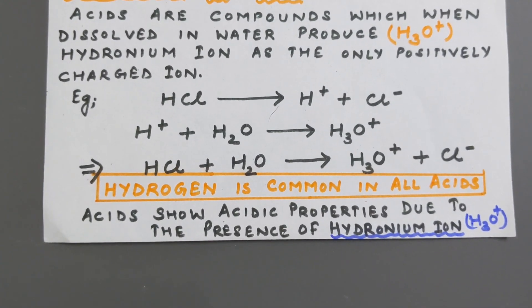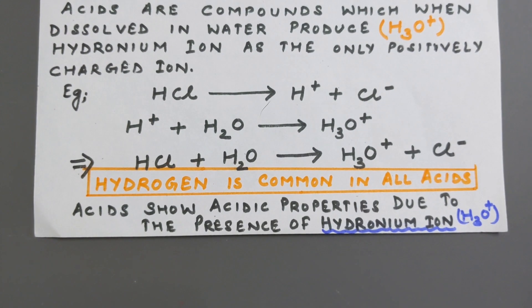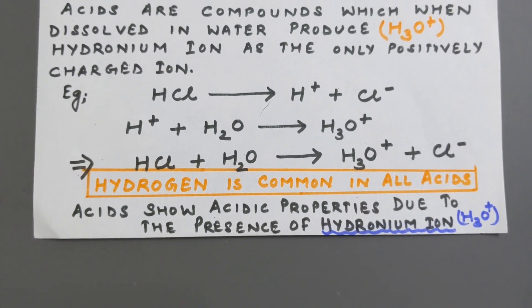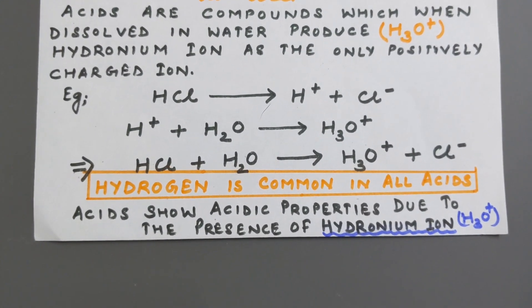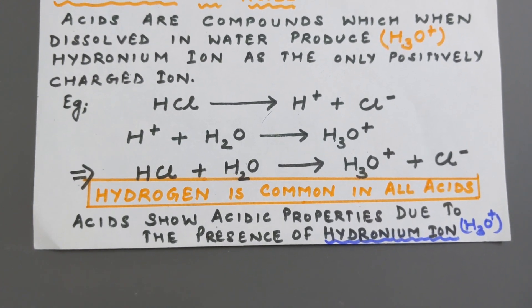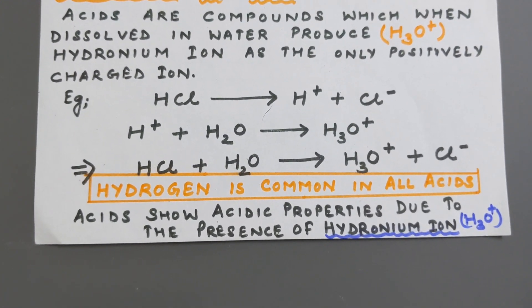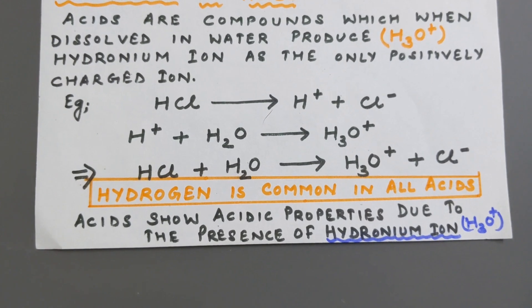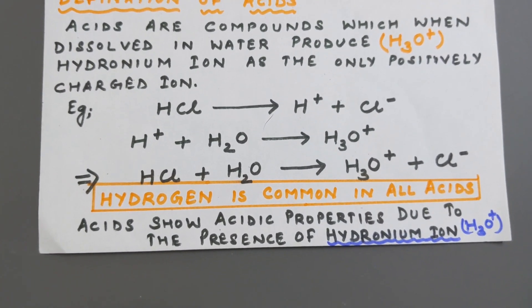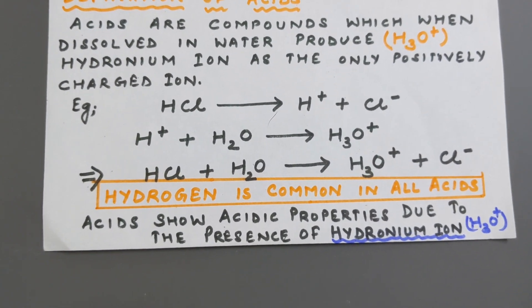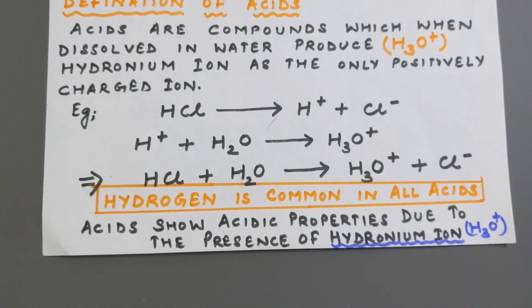Therefore, we can say that acids show acidic properties only due to the presence of hydronium ion. This is very important: though hydrogen ions are common in all acids, until we dissolve them in water, they do not show acidic properties because when we dissolve acids in water, they produce hydronium ion H3O+.